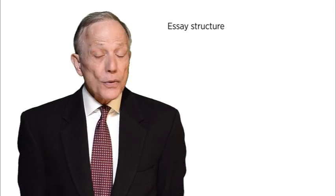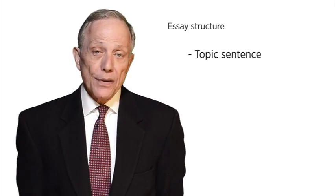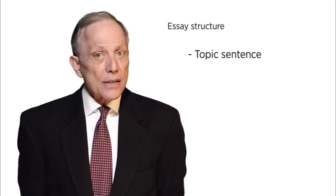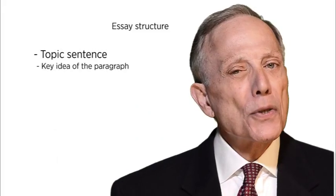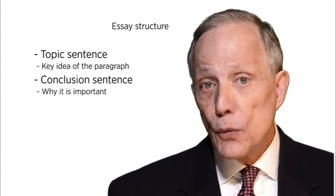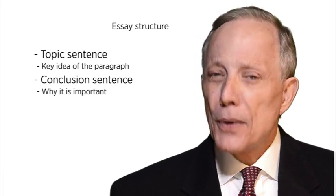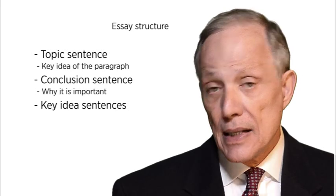In addition to the overall structure, or gross morphology, rhetoric shows us that individual paragraphs themselves also have a structure made up of three parts. The first part is the topic sentence, normally the first sentence of the paragraph, where you'll find the key idea developed throughout the paragraph. There'll also be a conclusion sentence telling you why it's important, and in between — particularly in long paragraphs — you'll find other sentences that also contain key ideas.